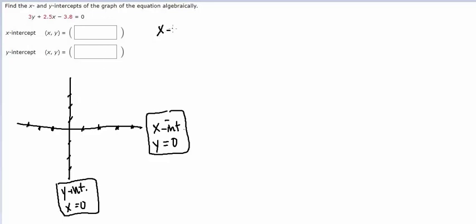Let's do the x-intercept first. So the x-intercept, we'll do 3y plus 2.5x minus 3.8 equals 0. So I said for an x-intercept, y is 0.